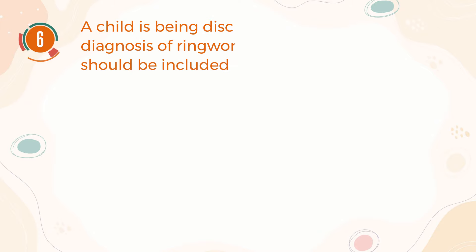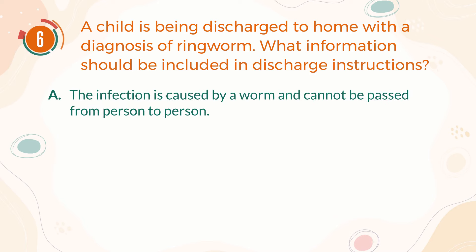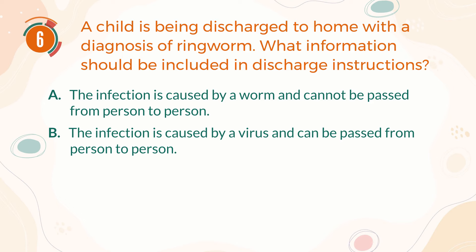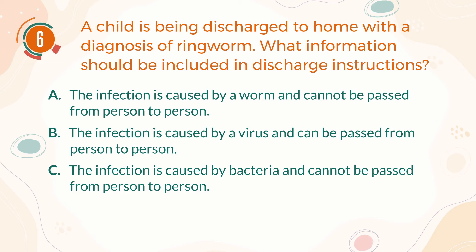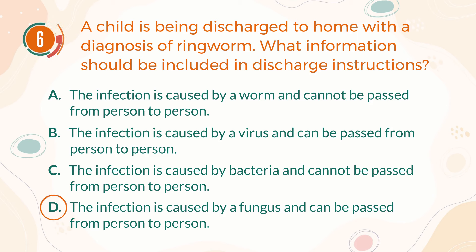Number 6. A child is being discharged to home with a diagnosis of ringworm. What information should be included in discharge instructions? A, the infection is caused by a worm and cannot be passed from person to person. B, the infection is caused by a virus and can be passed from person to person. C, the infection is caused by bacteria and cannot be passed from person to person. D, the infection is caused by a fungus and can be passed from person to person. The correct answer is D.